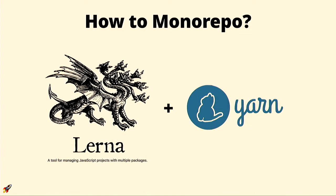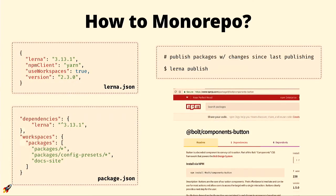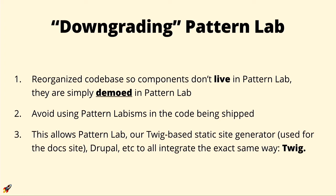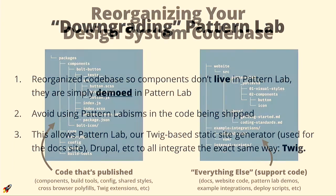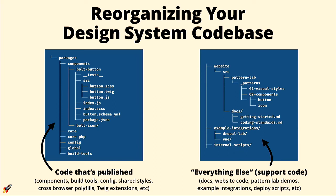There are great tools like Lerna that solve this main problem. We use Lerna plus Yarn Workspaces — you say here's where my components live, tell it to publish, and it publishes to NPM. This also required us to rethink how we organize our code — we had to downgrade Pattern Lab. Instead of Pattern Lab being the source of truth, Pattern Lab is actually just reflecting demos of our source of truth, consuming the pieces the same way Drupal or any other consumer would. Components, build tools, and config that get published live in one bucket; supporting code like your website, documentation, and example integrations live in a separate folder that doesn't get published.